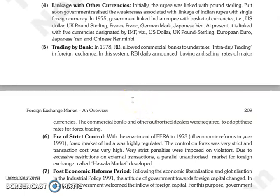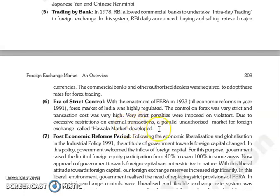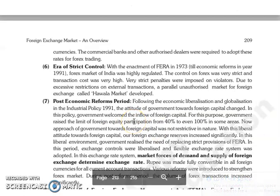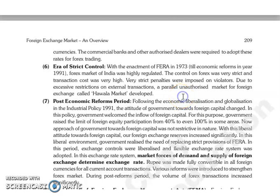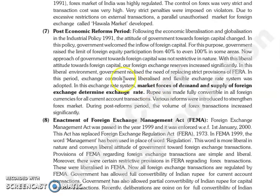In 1978, the RBI allowed commercial banks to do intraday trading in foreign exchange. Next is the era of control — with the enactment of FERA in 1973, the forex market in India was highly regulated, transaction costs were very high, and strict penalties were adopted. Due to excessive restrictions on external transactions, a parallel unauthorized market for foreign exchange, known as the hawala market, developed. Next is the post-economic reforms period, which we will continue in the next lecture. Thank you so much.